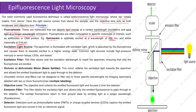The excitation light source: the specimen is illuminated with excitation light, which is absorbed by the fluorophores and causes them to become excited to a high energy state. Common light sources include high-pressure mercury or xenon lamps, LEDs, and lasers. The excitation filter allows only the excitation wavelength to reach the specimen, ensuring that only the fluorophores are excited.